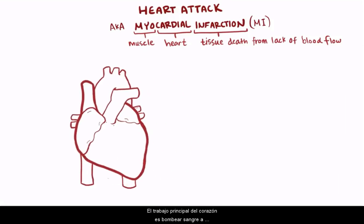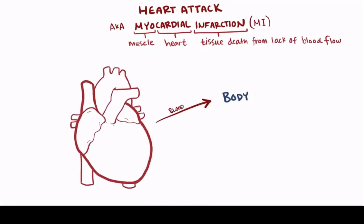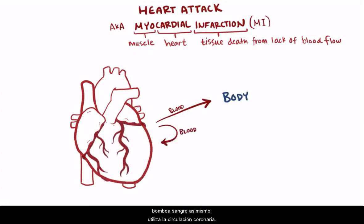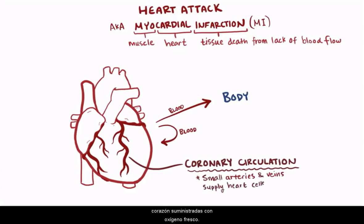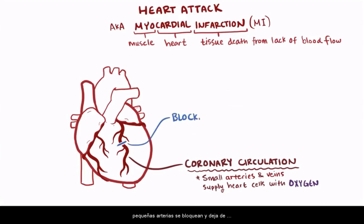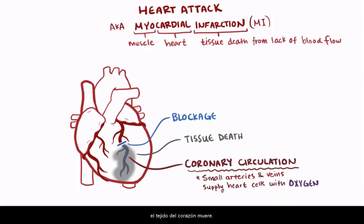Now the heart's main job is to pump blood to your body's tissues. Well, the heart also needs blood, and so it also pumps blood to itself, using the coronary circulation. The coronary circulation is the system of small arteries and veins that help keep the heart cells supplied with fresh oxygen. Heart attacks happen when these small arteries become blocked and stop supplying blood to the heart tissue, and if this happens for long enough, heart tissue dies.